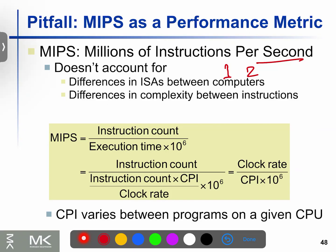MIPS can also be expressed as instruction count divided by execution time. For example, if you have 100 instructions and the execution time is 10 seconds, you can calculate the MIPS value accordingly.